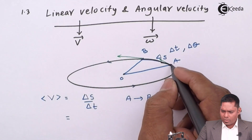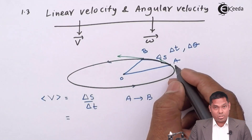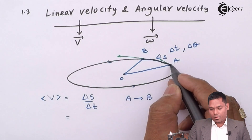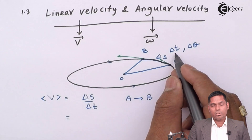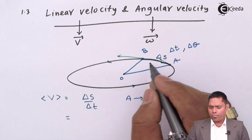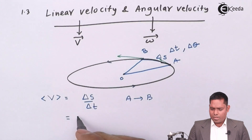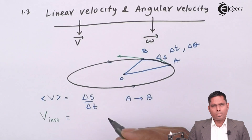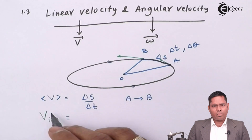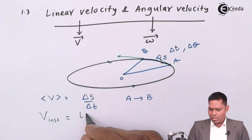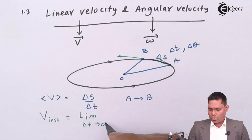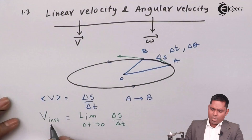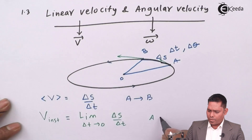If I want the velocity at any point, say at instant A, I have to bring point B very close to A by reducing the time. That means I take the limiting value. The instantaneous linear velocity V is the limit as delta T tends to 0 of delta S over delta T. This is the velocity at point A.